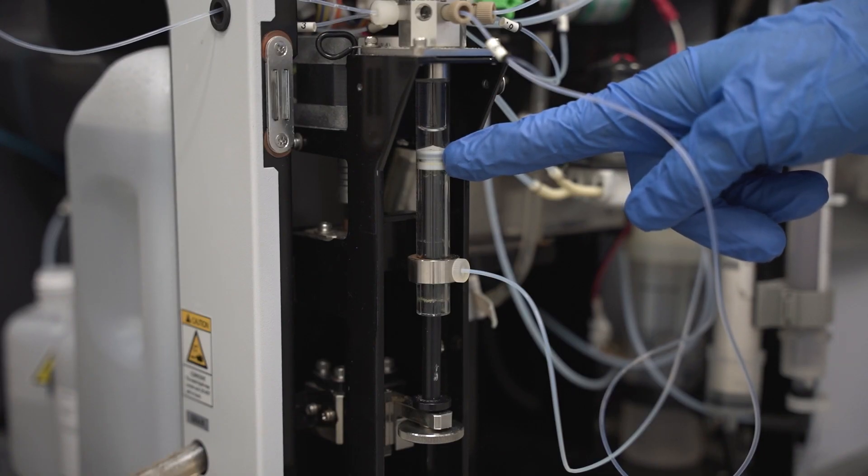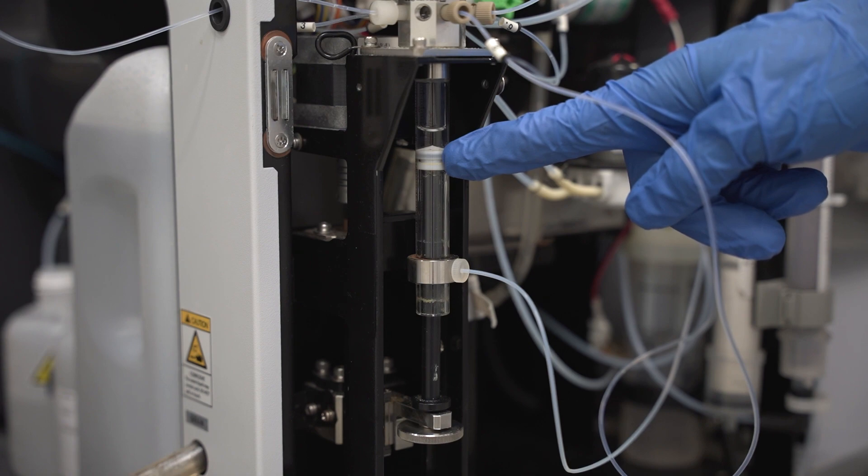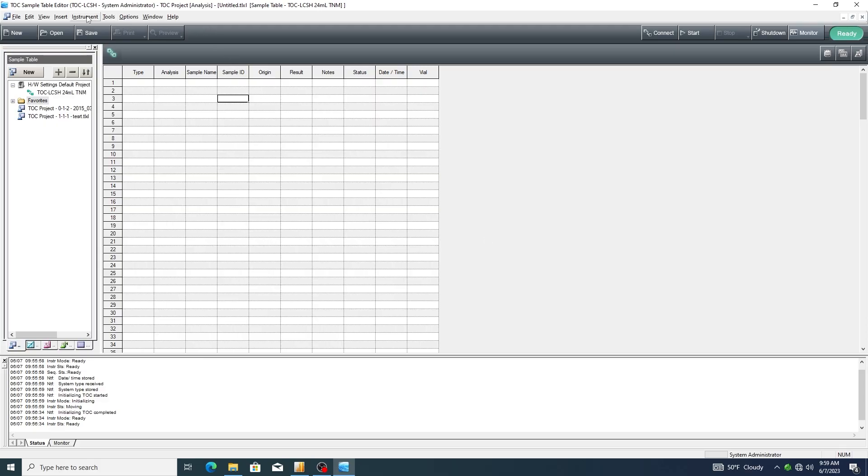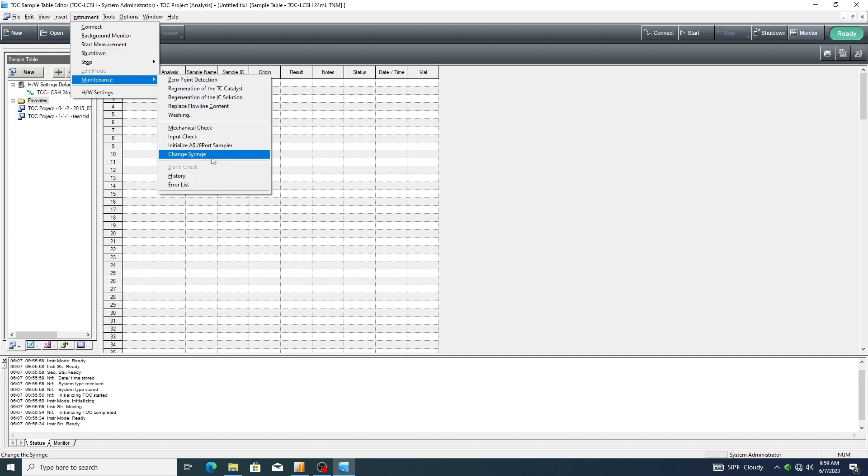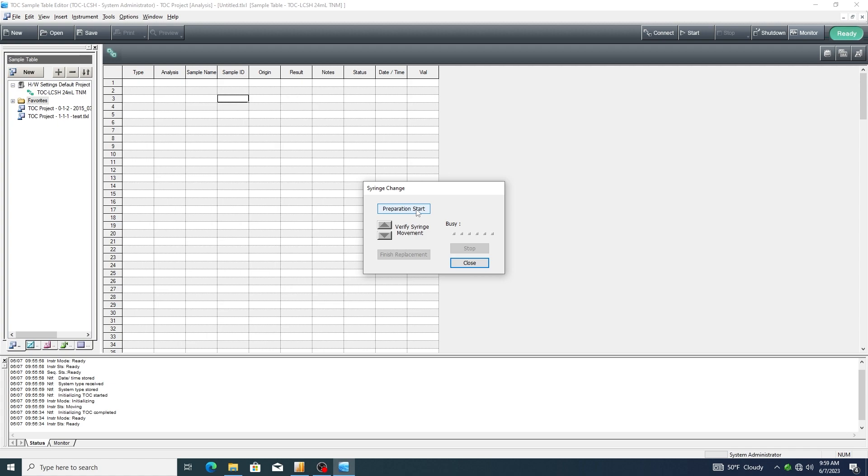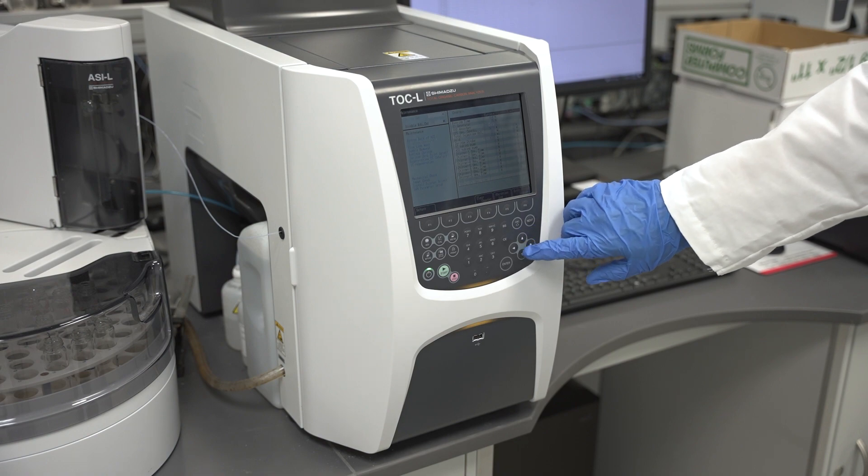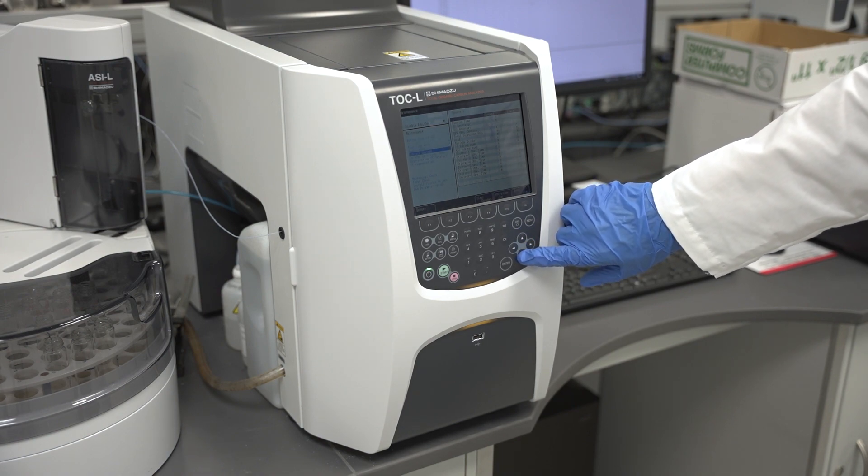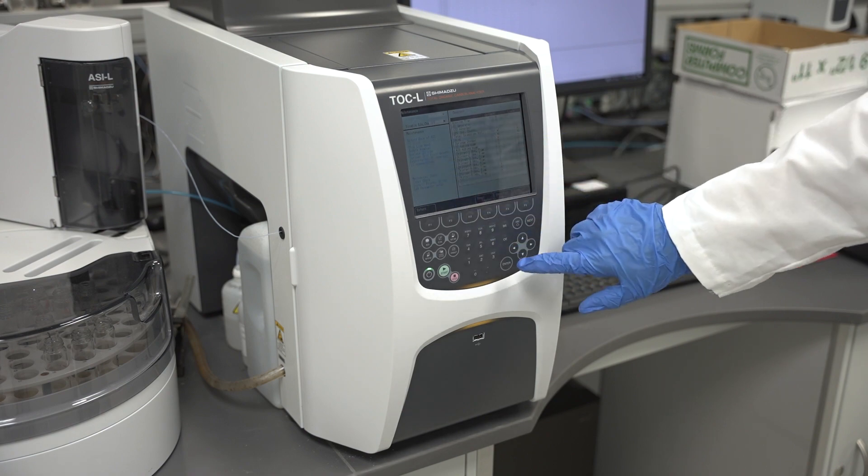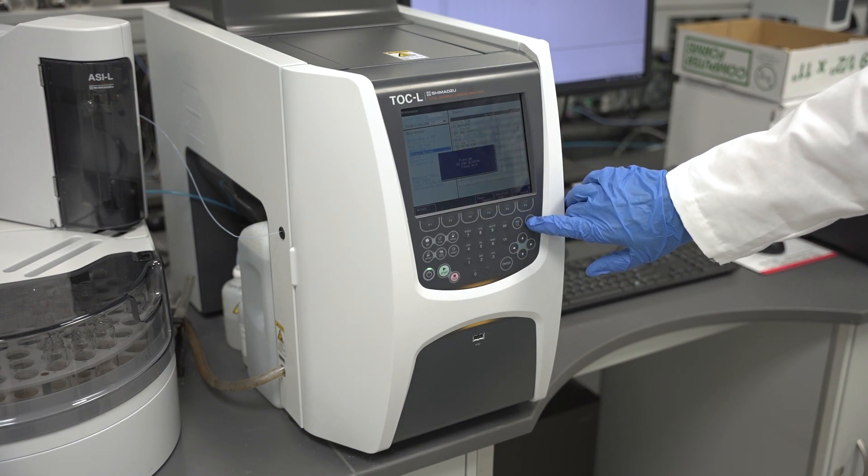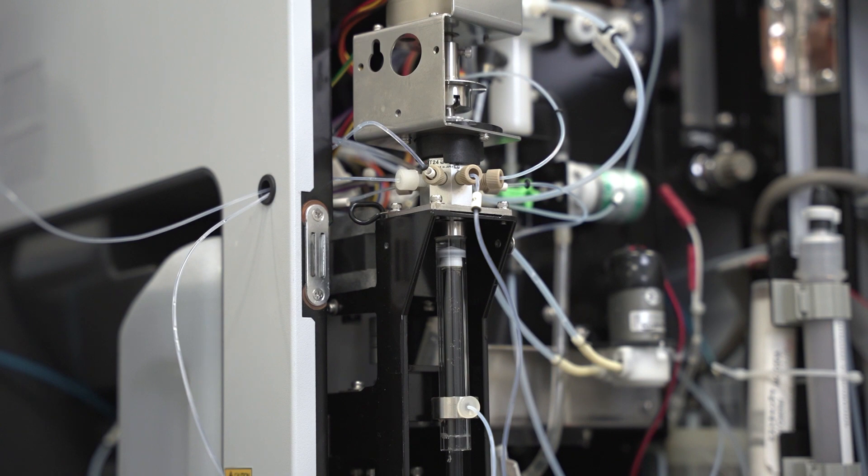Now we will move on to replacing the plunger tip in the syringe. First, go to the maintenance screen and to the option for change syringe. For PC-controlled instruments, this can be found under instrument maintenance replace syringe. Press preparation start in the next window. For standalone instruments, push F5 for maintenance on the initial screen. Then use the down arrow key to highlight replace syringe and push next. The instrument will now prepare the syringe for replacement and move the plunger down.